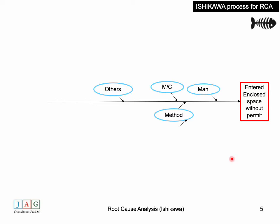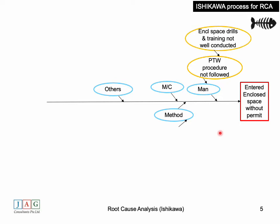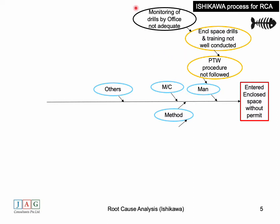We now dive deep into each category. Looking at 'man': why did the man not follow the permit to work procedure? Because enclosed space drills and training were not well conducted on board. Monitoring of drills by the office was not adequate, and thus drills were not being properly conducted. And why was monitoring of drills by the office not adequate? Senior officers were not adequately monitoring the permit to work process.